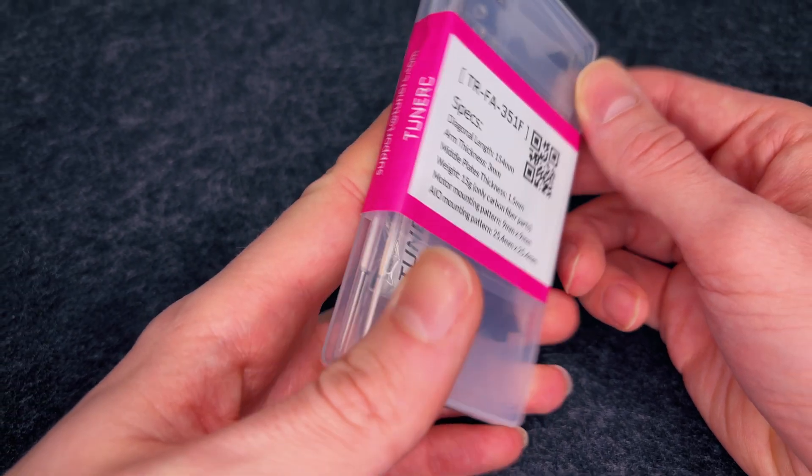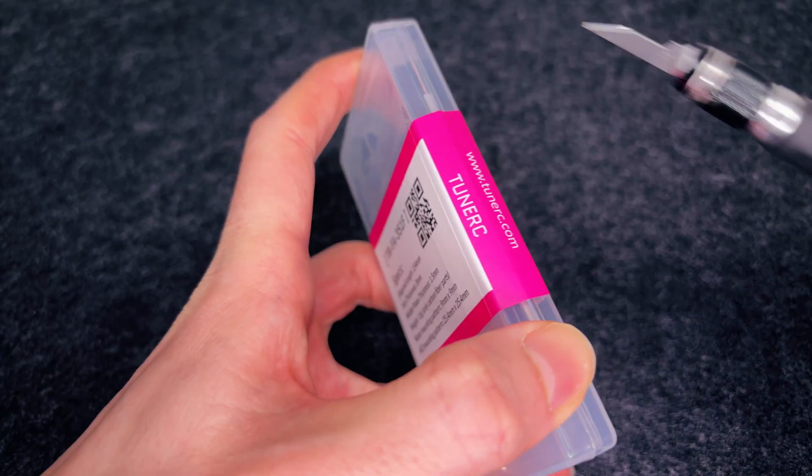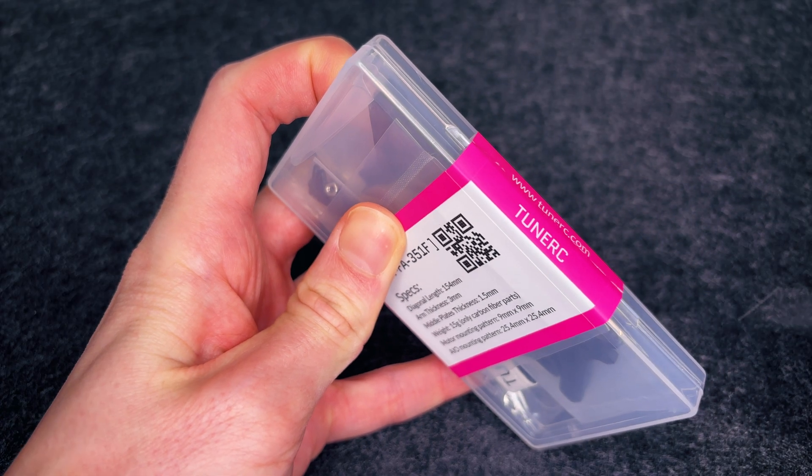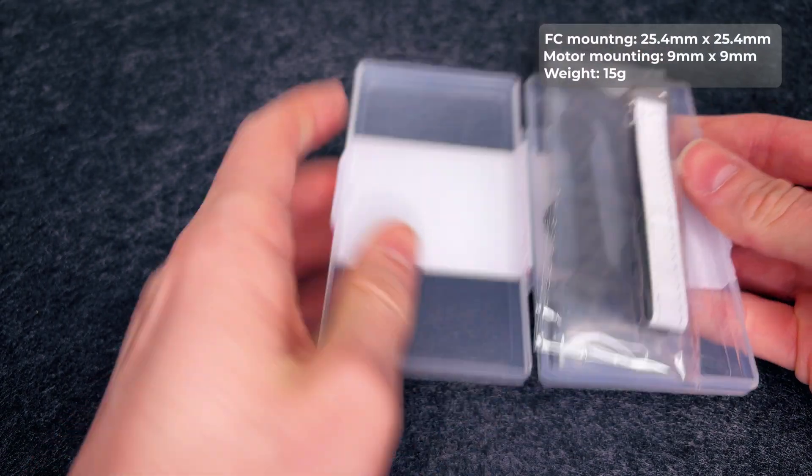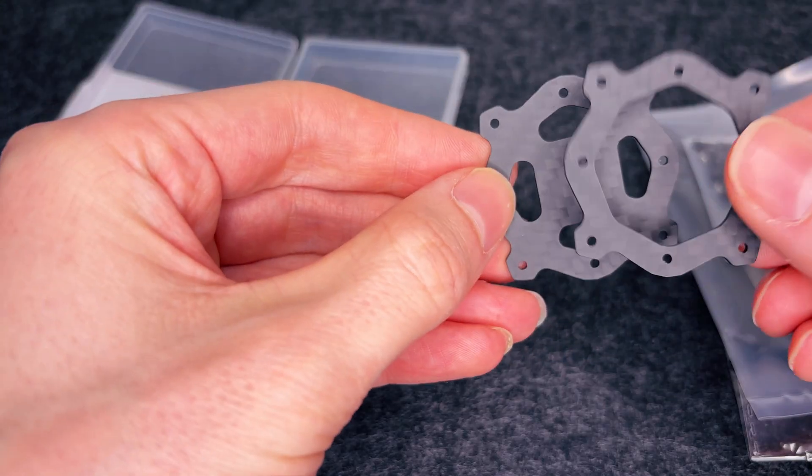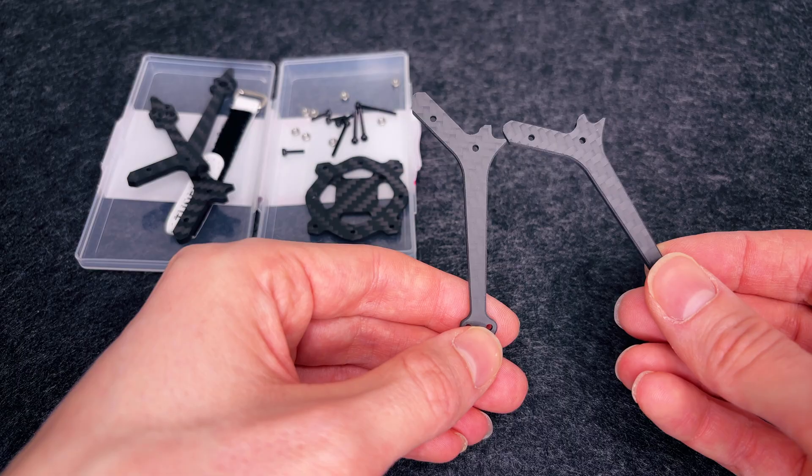Alright, before we send this thing ripping through the air, we gotta start with the basics. The frame. This is the Toon RC 3.5-inch frame, built for AIO stacks with a 25mm mounting pattern. And the best part, it comes in a kit at an insane price. But more on that later. The arms, they're thick, and feel super sturdy. Definitely built to take a hit.